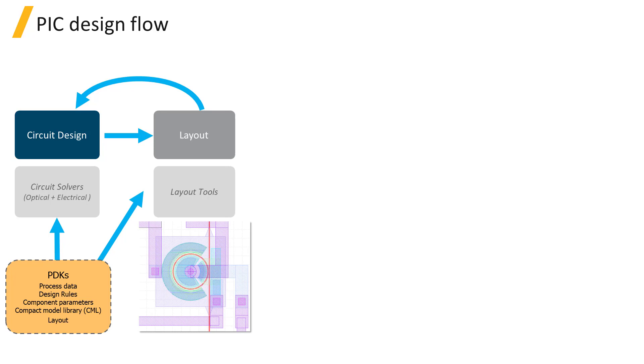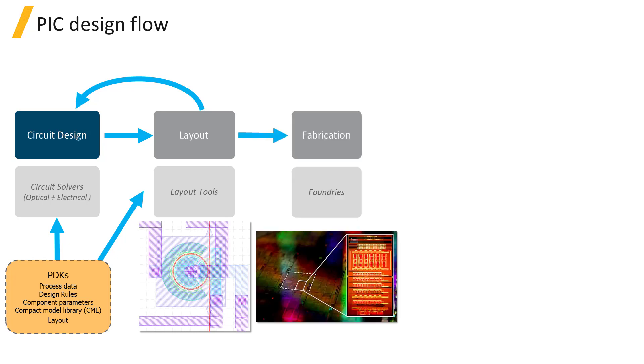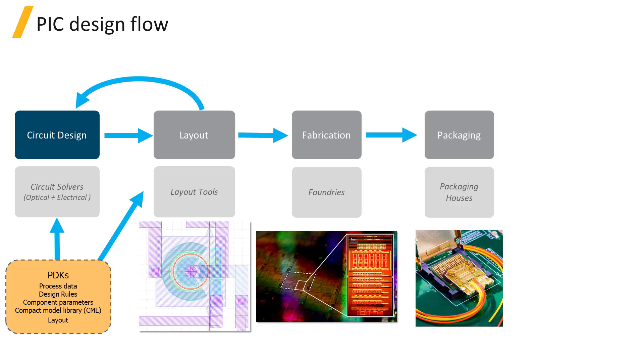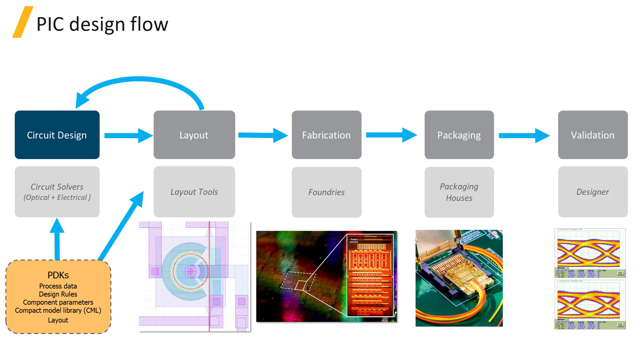Once a layout is generated, the optical and electrical performance of the circuit is simulated. Once a circuit and layout are optimized, the layout is sent to the foundry for fabrication. The fabricated circuit gets packaged and arrives back at the designer for characterization and validation.